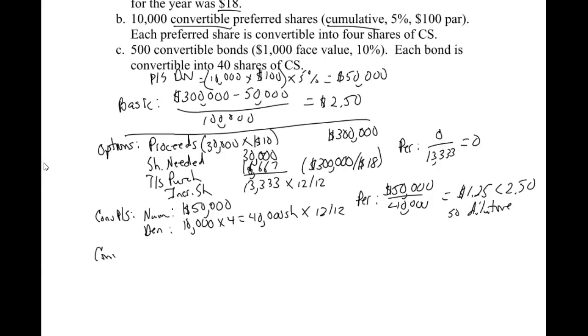And then our last one is convertible bonds. We're still doing our numerator and denominator effects. So remember the bonds, our numerator effect is adding back the interest net of tax. So we said, it says up here, we have 500 $1,000 bonds. So that gives me my total face value of the bonds. Multiply that times the 10%. That gives me the interest.